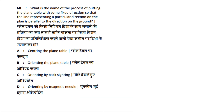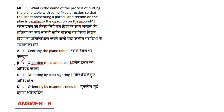What is the name of the process of setting the plane table with a fixed direction so that the line representing a particular direction on the plan is parallel to the direction on the ground? Options: Centering the Plane Table, Orienting the Plane Table, Orienting by Backsighting, Orienting by Magnetic Needle. Answer option B — Orienting the Plane Table. We orient the plane table so all lines are parallel to their respective ground directions.